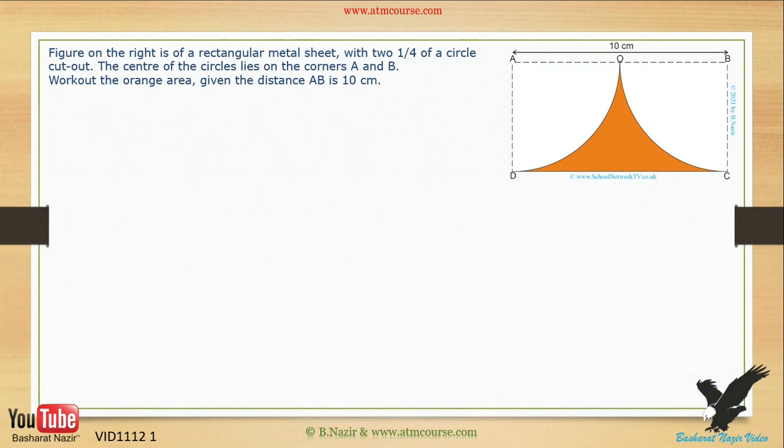Figure on the right is of a rectangular metal sheet, with two quarters of a circle cut out. The center of the circles lies on the corners A and B. Work out the orange area, given the distance AB is 10 centimeters.